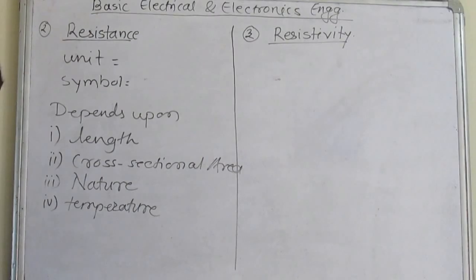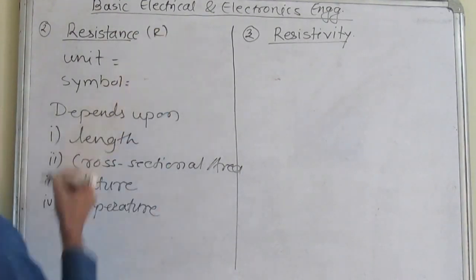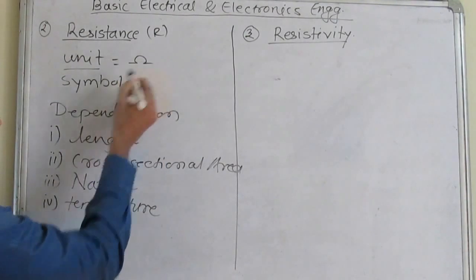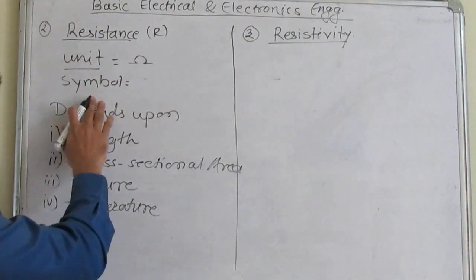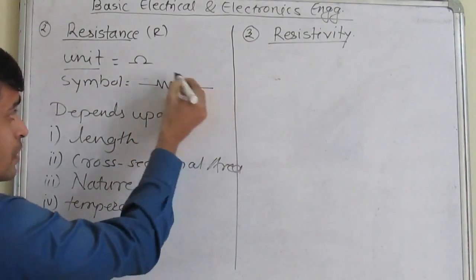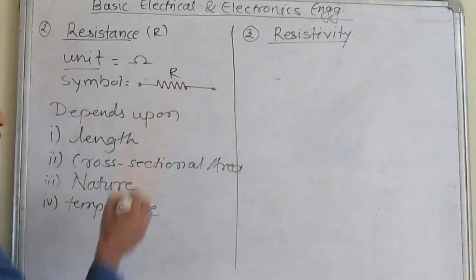Resistance. What is the resistance? Resistance is the property of a substance that opposes the flow of electricity or current through it. The resistance is indicated by R and the unit of resistance is Ohm. The symbolic representation of a resistance is like this.